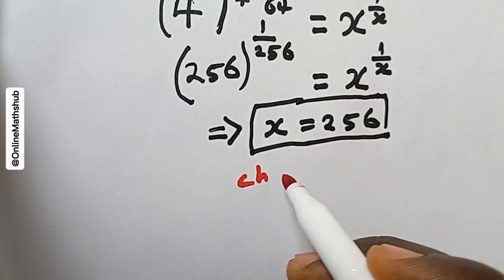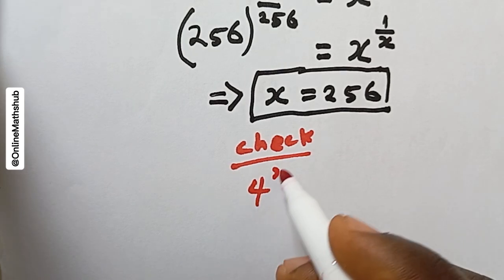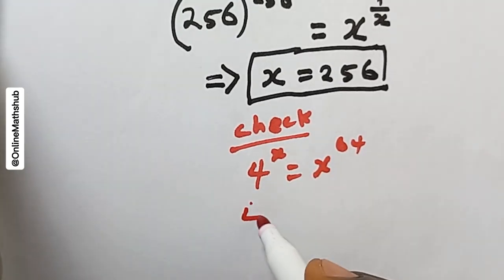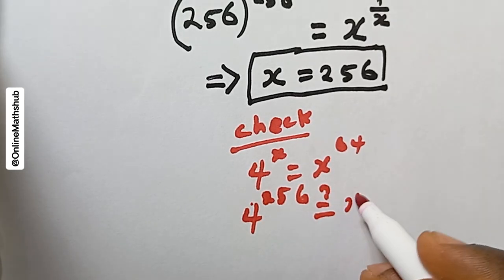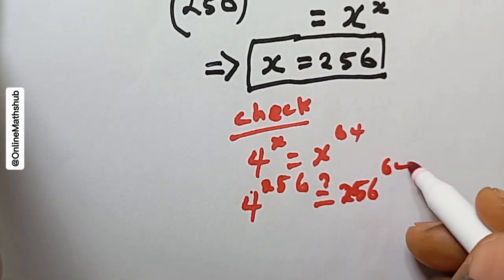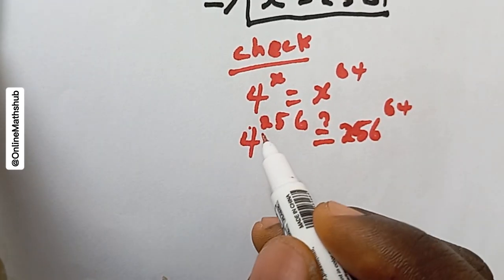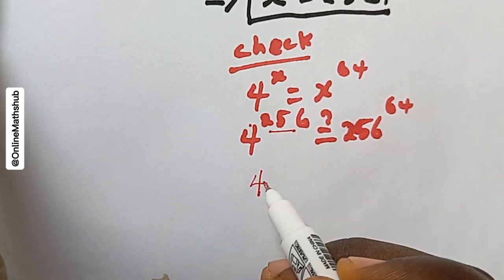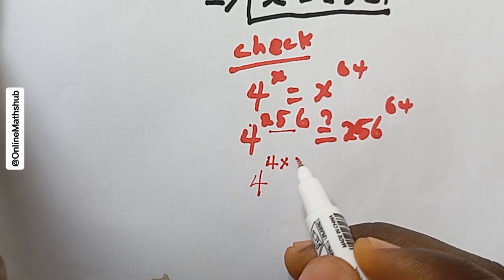To verify, we run a quick check. Recall the original equation: 4^x = x^64. We replace x with 256, so we need 4^256 = 256^64. On the left, I can split 256 as 4 × 64, so we have 4^(4×64).